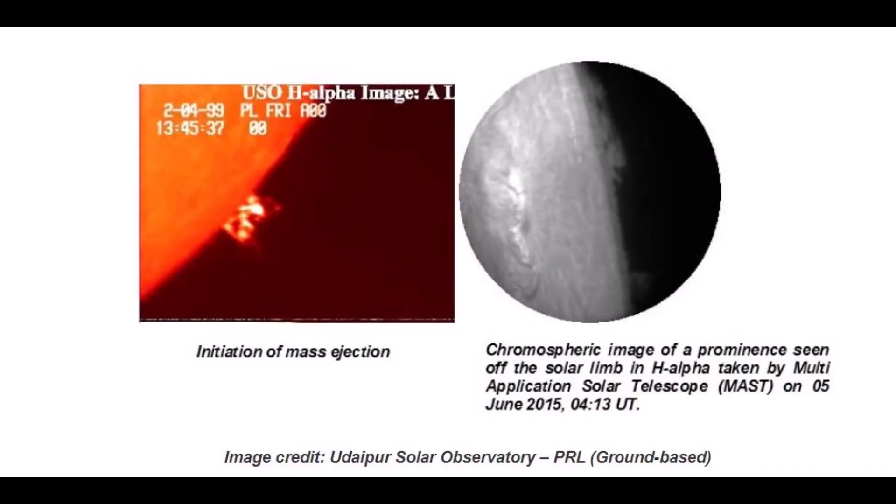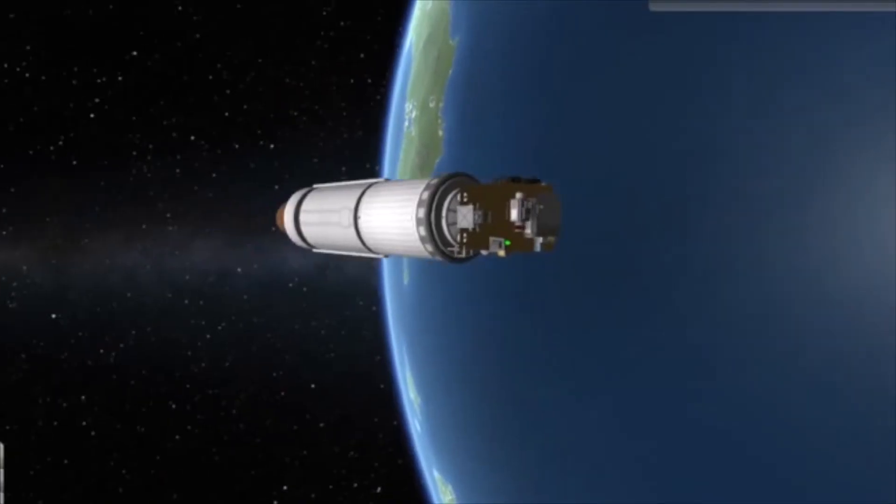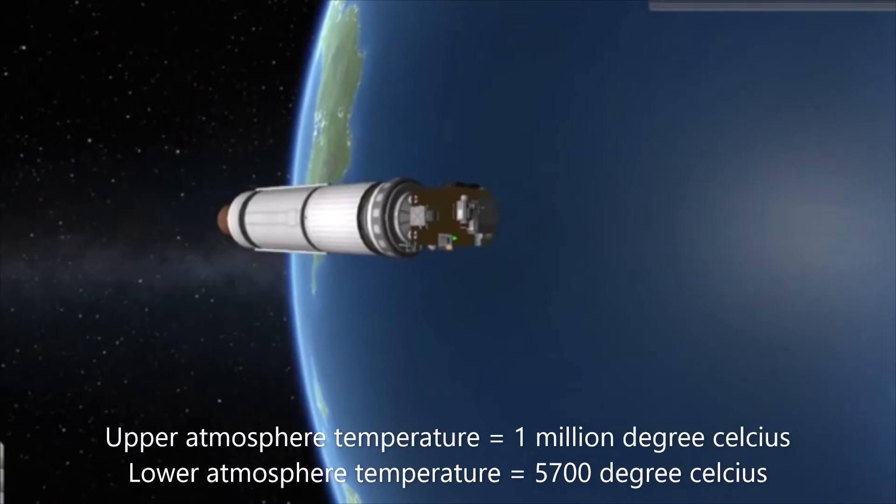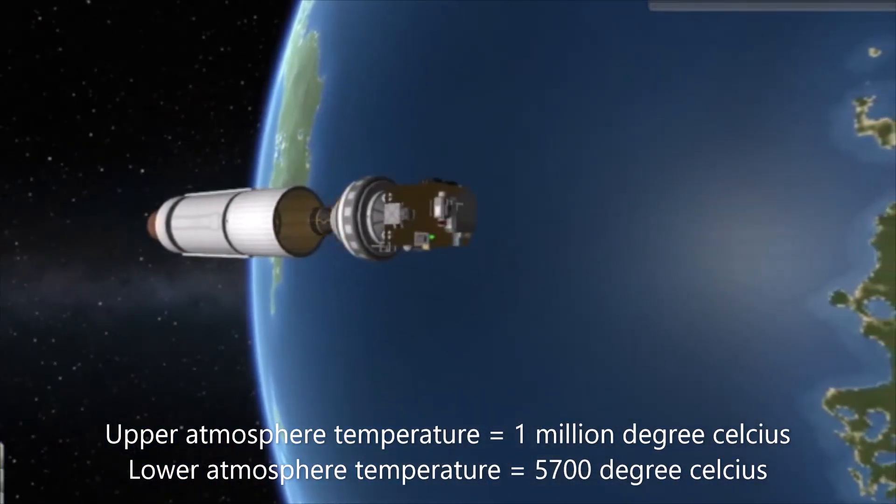One of the major unsolved issues in the field of solar physics is that upper atmosphere of sun is about 1 million degree Celsius hot whereas the lower atmosphere is just about 5700 degree Celsius.